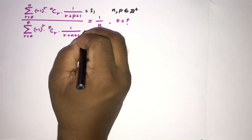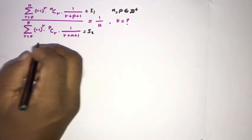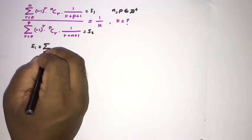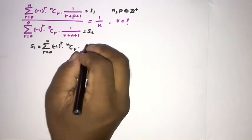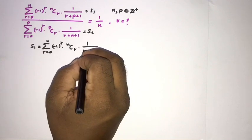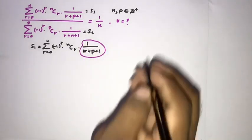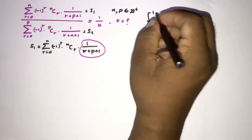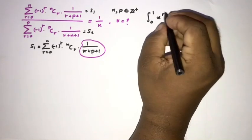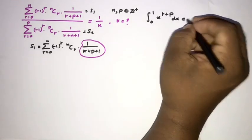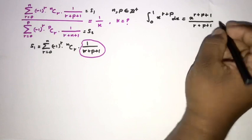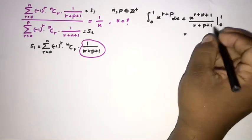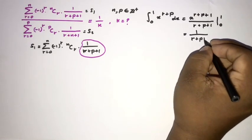Let's call the first series S1 and the second series S2. For S1, we have the sum from 0 to n of minus 1 to the r times n choose r times 1 over r plus p plus 1. The key observation is that 1 over r plus p plus 1 equals the integral from 0 to 1 of x to the r plus p with respect to x.